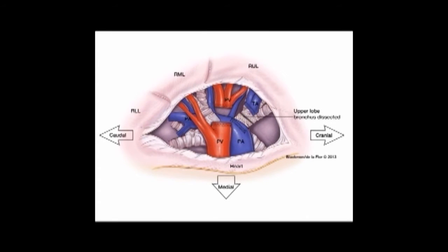Once the truncus anterior branch of the pulmonary artery has been divided, the next structure encountered is either the right upper lobe bronchus or the posterior ascending pulmonary artery. These structures are typically right next to each other. We do not recommend that one be divided in front of the other, but instead recommend that you see which one has the most reasonable angle. Based on that decision, you can divide either the right upper lobe bronchus or the right upper lobe branch of the posterior ascending pulmonary artery. Once the bronchus has been divided, you can then encircle, staple, and divide the posterior ascending branch of the pulmonary artery.